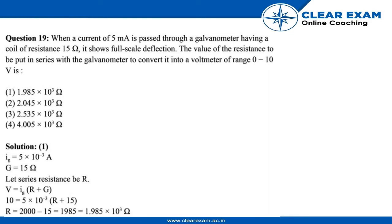Hello guys, let's discuss question 19. When a current of 5 mA is passed through a galvanometer having a coil of resistance 15 ohms, it shows full-scale deflection.